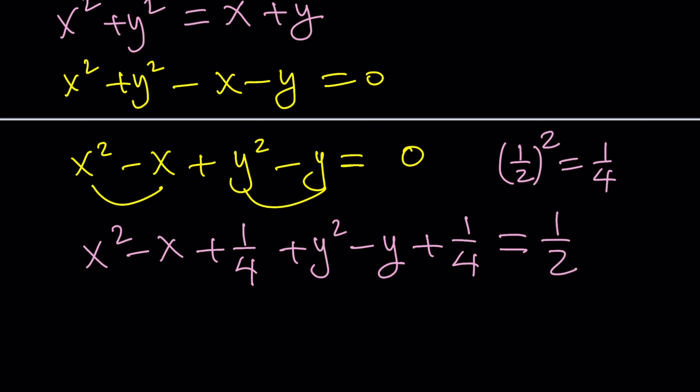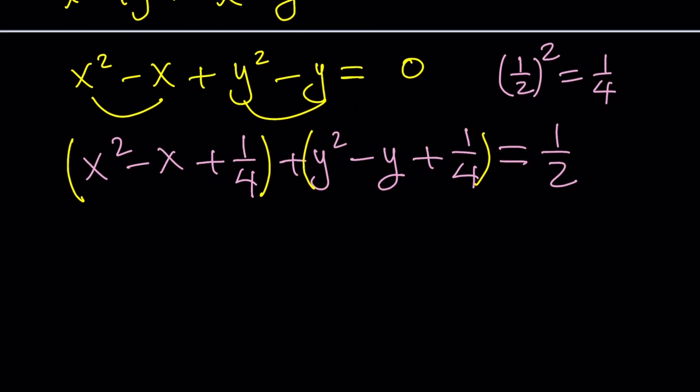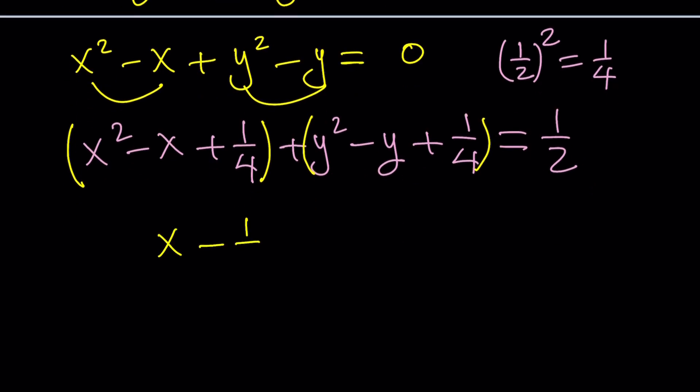Great. Now we got perfect squares, didn't we? So go ahead and take this and take that separately. The first one is going to become x minus one half squared. Second one is y minus one half squared equals one half.